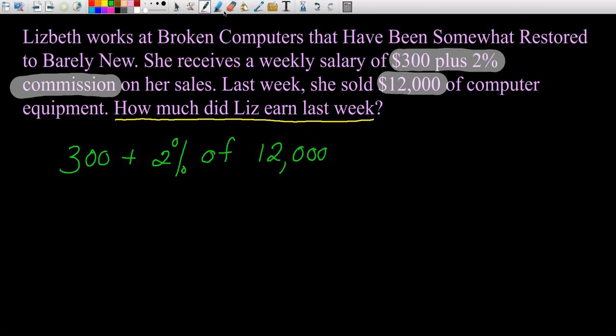So $300 plus 2% of the sales, $12,000. I'm going to change this 'of' to a multiplication. You need to do the multiplication before the addition. So I'm going to take 2% of $12,000, then I'll add the $300 at the end. So 2% can be broken down into 1% plus 1%. I'm going to take 1% of $12,000 twice.